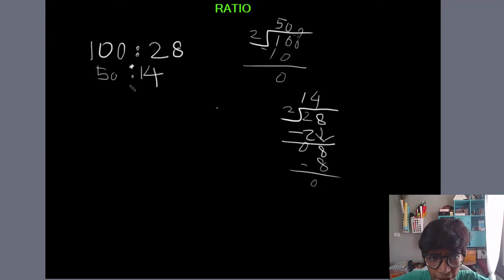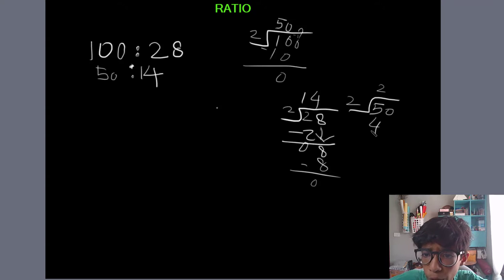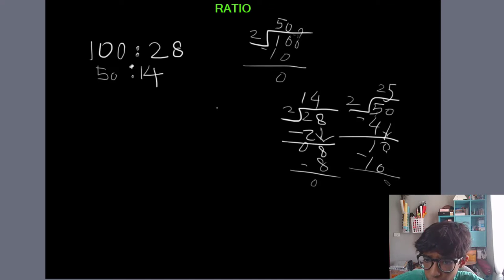Now we're going to divide these two numbers with two again. So we will write here 50, and then two. Two twos are four, minus one comes down, zero will go down, and then two fives are 10, minus zero. So we're going to write 25 here below 50.